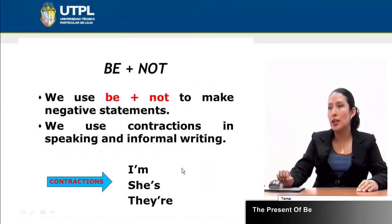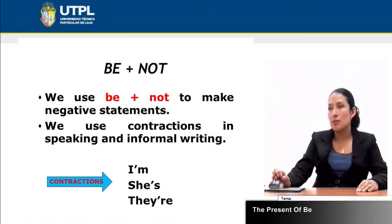But when do we use a negation of 'be' plus 'not'? We use 'be' plus 'not' to make negative statements. In the previous slides we were analyzing affirmative statements in a very basic way.